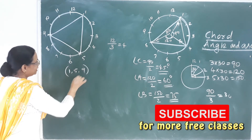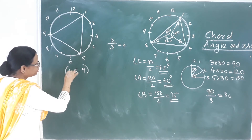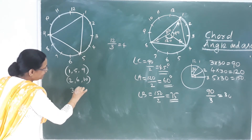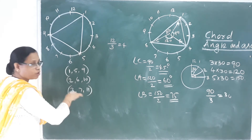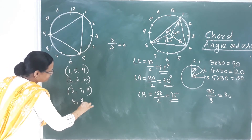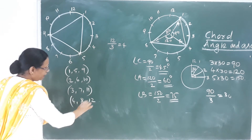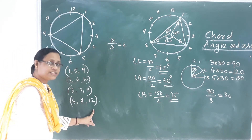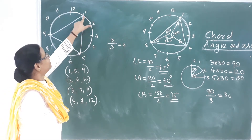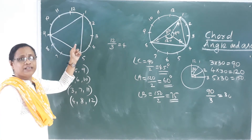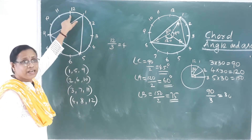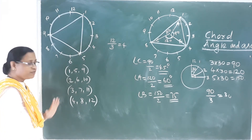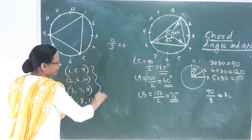The second equilateral triangle starts at 2, giving 2, 6, 10. Continuing this pattern with 5 and 9 as starting points, if we add 4 each time and go beyond 12 we cycle back. So there are 4 equilateral triangles in total.